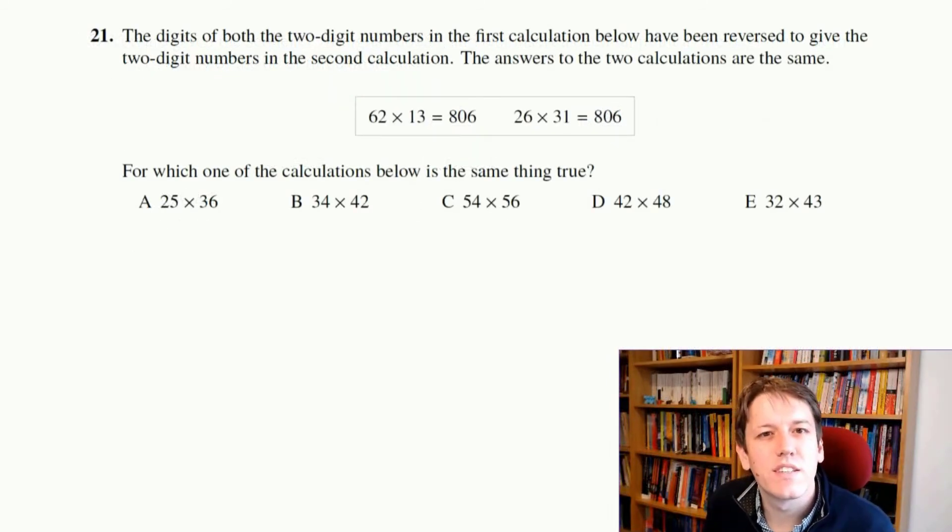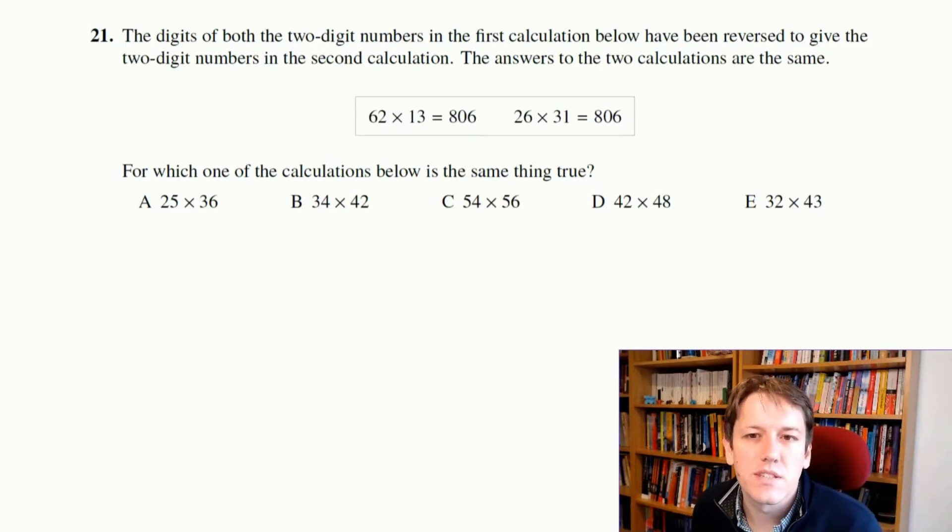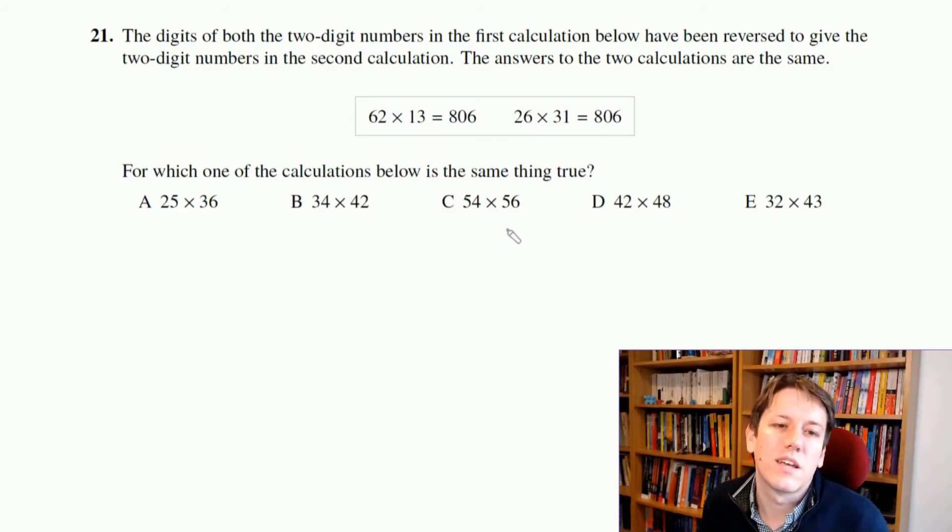Question 21, it says the digits of both the two digit numbers in the first calculation have been reversed to give the numbers in the second calculation, but the answers stay the same, so 62, they've swapped the digits to get 26, 13, they've swapped the digits to get 31, and we want to know which of the calculations give the same thing here.